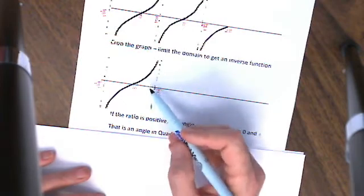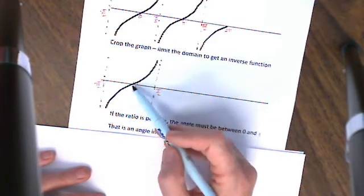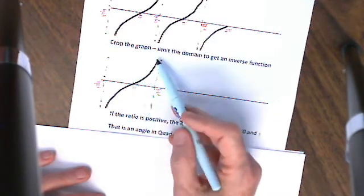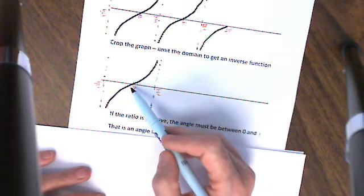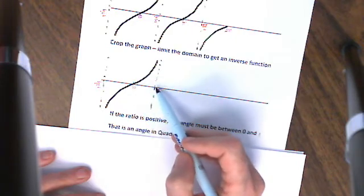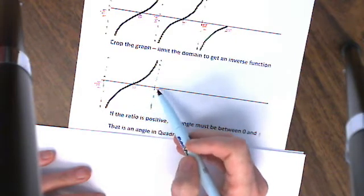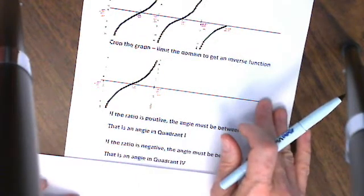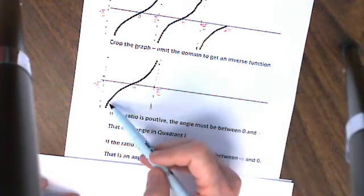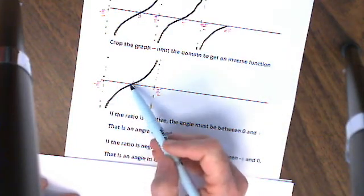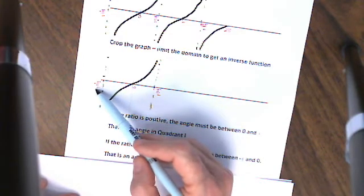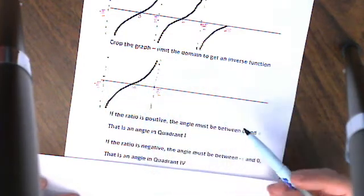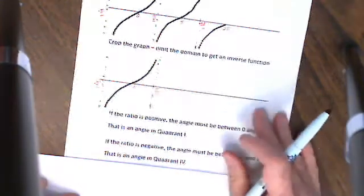If the ratio is positive — producing the part of the graph above the x-axis — the angle is going to have to be between 0 and pi over 2. If the ratio is negative, below the x-axis, that is going to be produced by an angle between minus pi over 2 and 0, or an angle in quadrant 4.